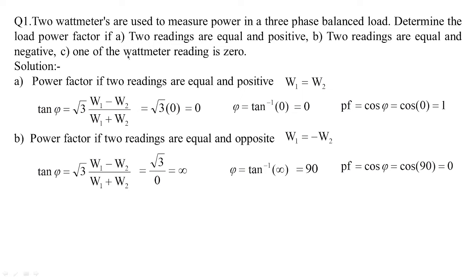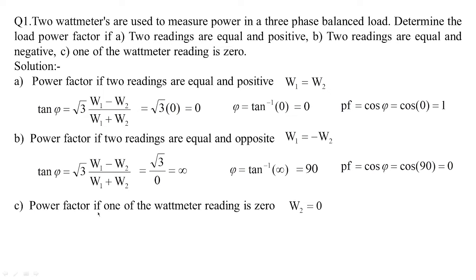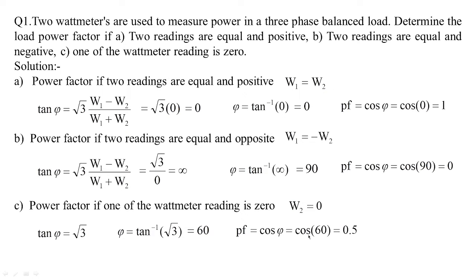Finally, if one of the wattmeter readings is zero — setting either W1 or W2 equal to zero — tan φ becomes equal to √3. Therefore φ = tan⁻¹(√3) = 60 degrees, and the power factor equals cos 60, which is 0.5. This is a basic question commonly posed for the two-wattmeter method.